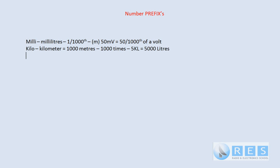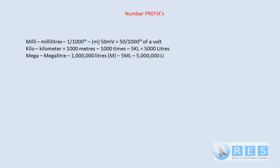And the last one is mega. You might have heard of a megalitre of water. A megalitre of water is a million litres of water. So mega means a million times. The symbol for mega is a capital M. So five megalitres of water would be five million litres of water.